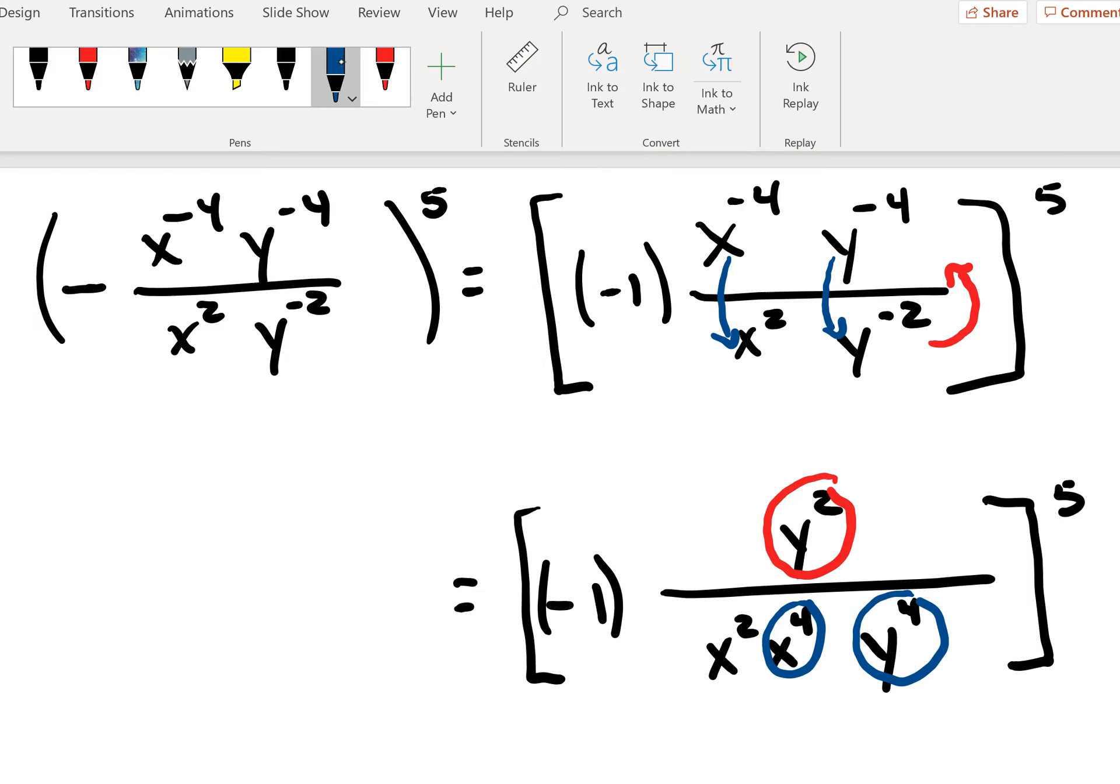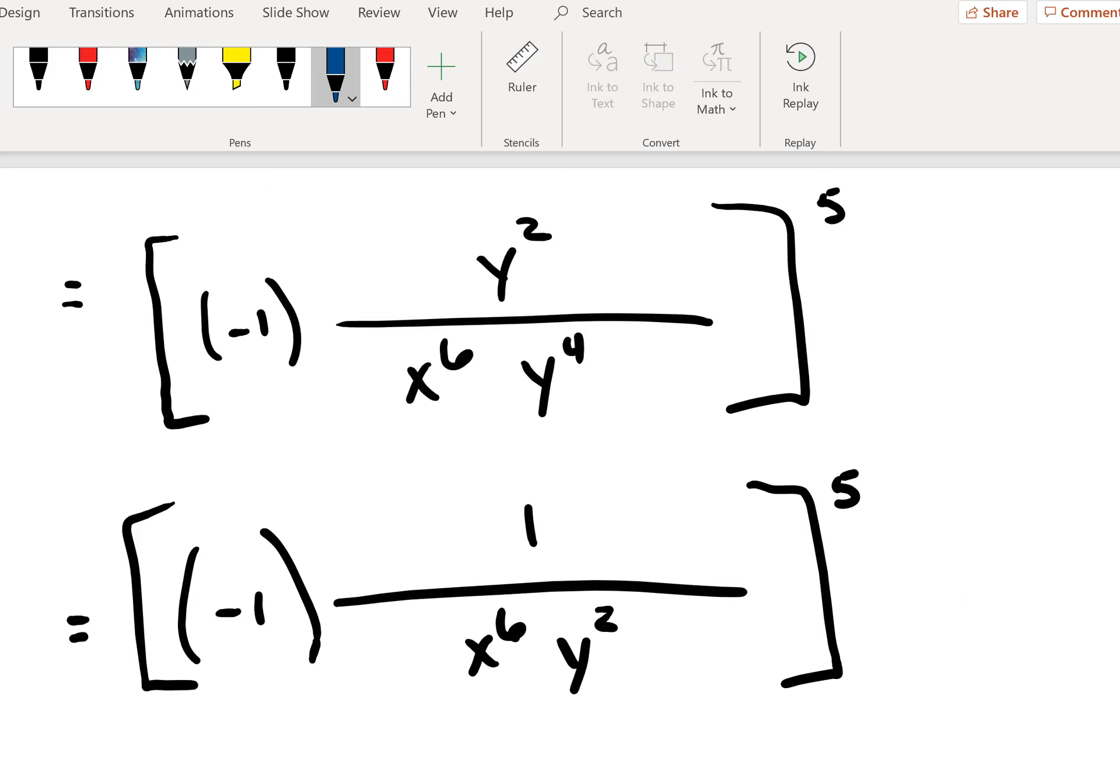Now, once again, you could do this from multiple different pathways at multiple different points in the problem. But for the moment now, you see that this has gotten rid of all of our negative exponents that we're having to deal with.